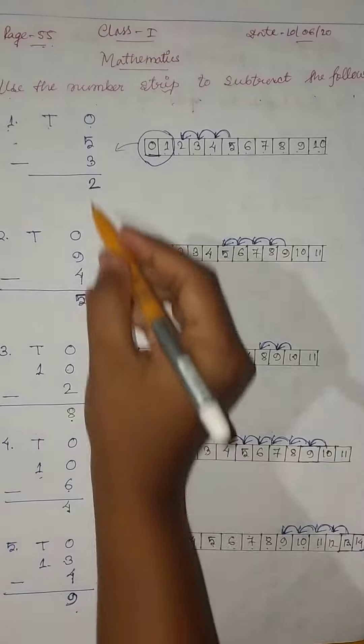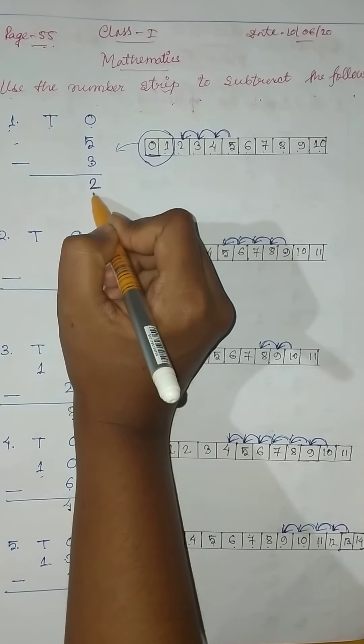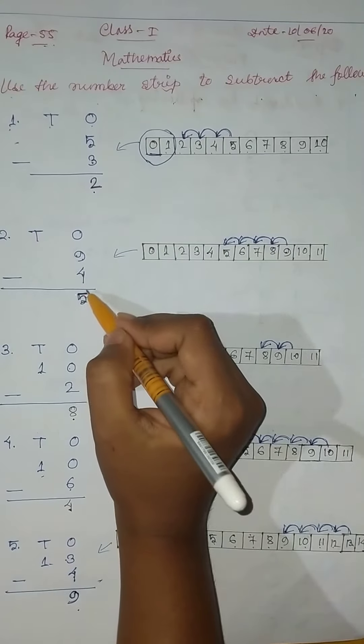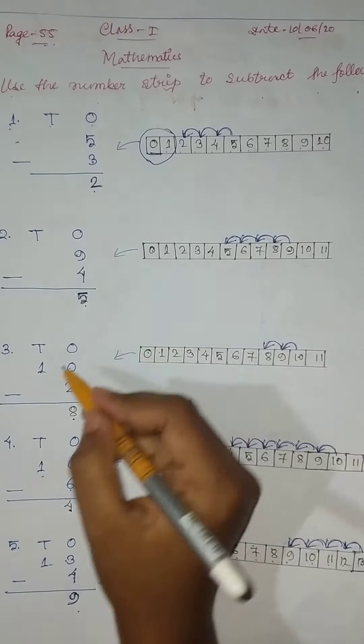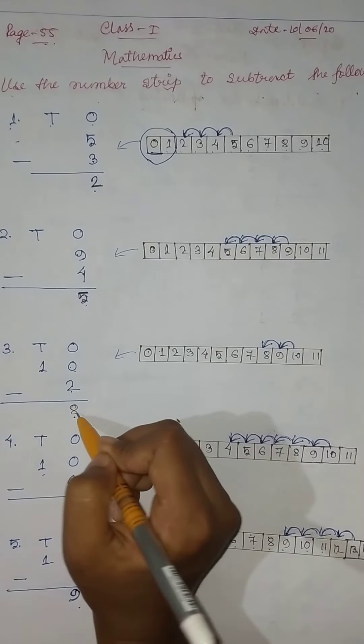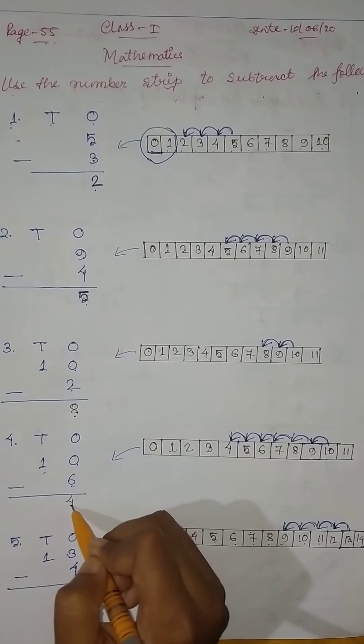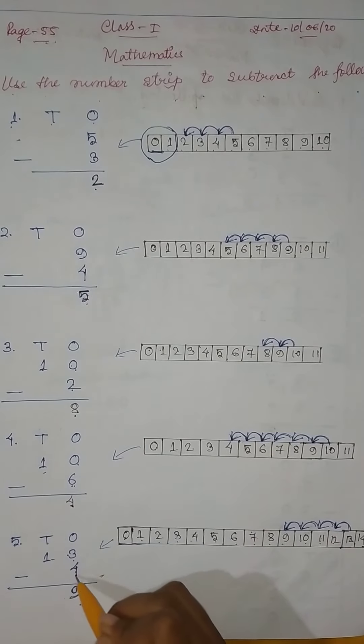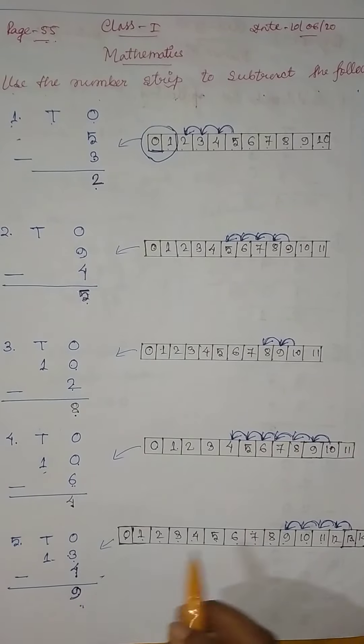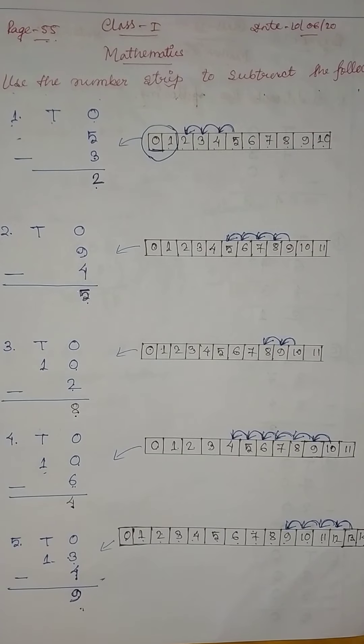Here, 5 minus 3 equals 2. 9 minus 4 equals 5. 10 minus 2 equals 8. 10 minus 6 equals 4. 13 minus 4 equals 9. Thank you.